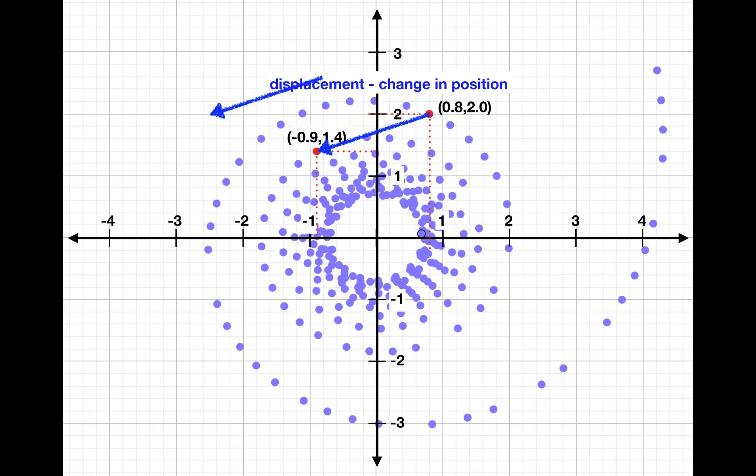The length of that arrow, which is referred to as the magnitude of the displacement, is about 1.8 units. And this angle here, which we refer to as the direction, is around 19 degrees below the negative x-axis. In order to fully define the displacement, it is critical to define both the magnitude and the direction.